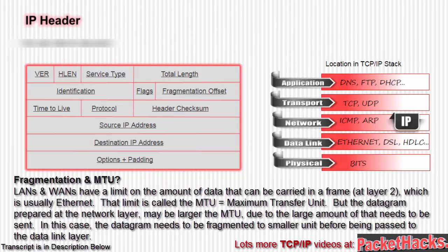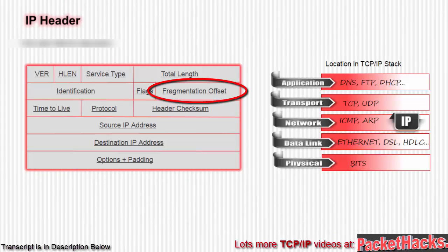Back to the fields — the next field is fragment offset, which is 13 bits. This indicates the relative position of each particular fragment when the datagram is fragmented. It's the offset of the original datagram in 8-byte units.